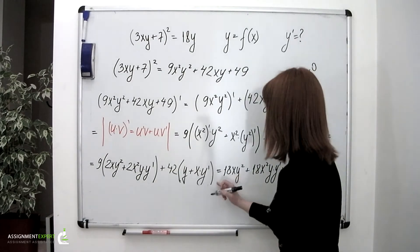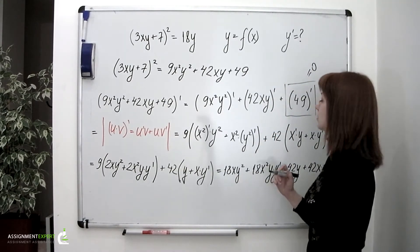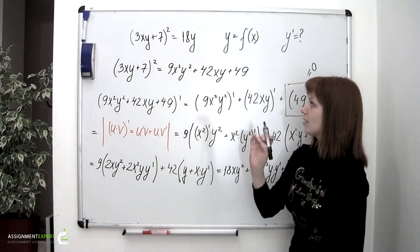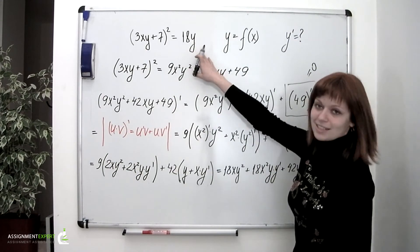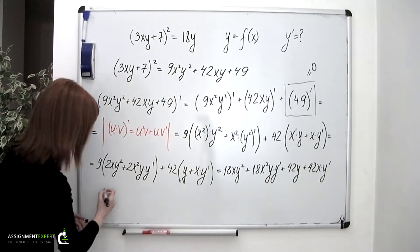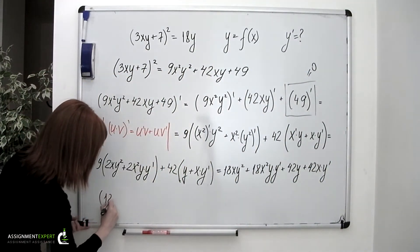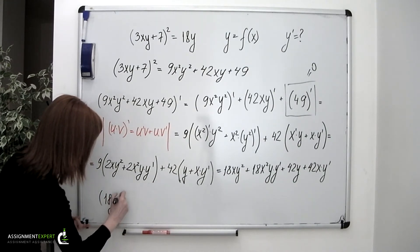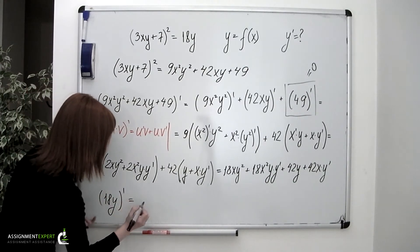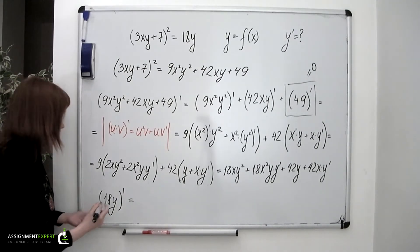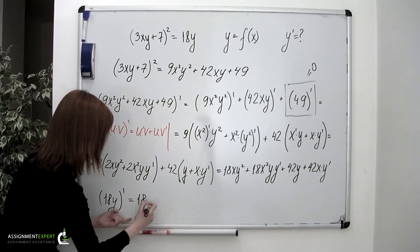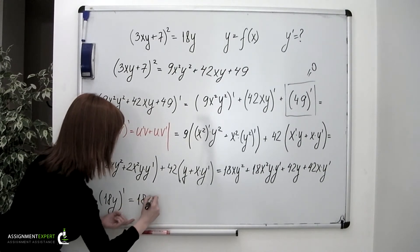Opening the brackets, we obtain 18xy squared plus 18x squared y times y prime, plus 42y plus 42x times y prime. This is what we obtain having differentiated the left-hand side. Now we have to differentiate the right-hand side, which is much simpler: the derivative of 18y is simply 18 times y prime.